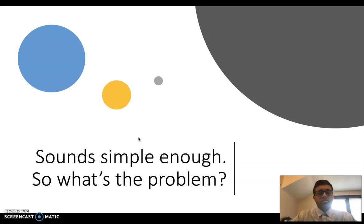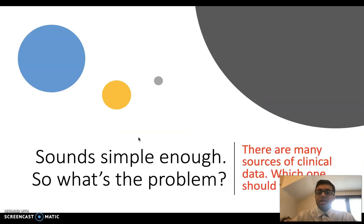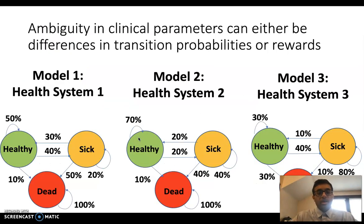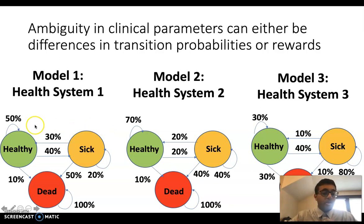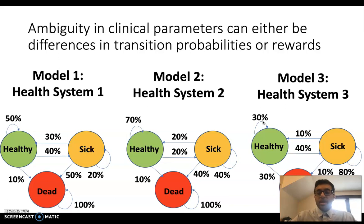So what exactly is the problem? The problem is that there are a lot of different sources of clinical data, and if I'm the physician trying to figure out what's best for my patient, I'm not sure which one I should use. This ambiguity in clinical parameters can take the form of differences in transition probabilities or differences in rewards. For example, if three different health systems are each studying some chronic disease, model one might say you have a 50% chance of staying healthy, model two sets it at 70%, and model three says 30%. A physician looking at all these conflicting numbers doesn't know what to do. With just one model, you could solve the problem very quickly, but conflicting sources of information make it unclear what's best for the patient.